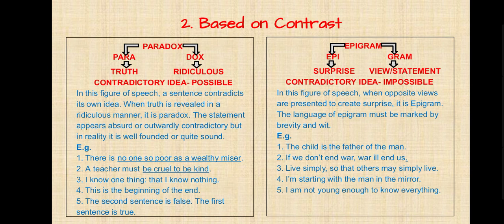Examples of paradox: 'There is no one so poor as a wealthy miser' — a wealthy person is a miser. 'A teacher must be cruel to be kind' — a teacher sometimes takes hard steps for kind purposes. 'I know one thing — that I know nothing' — a person may not be aware of everything. 'This is the beginning of the end.'